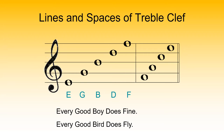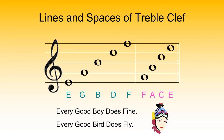How would you help students remember the lines and spaces? You might use a sentence like 'Every Good Boy Does Fine,' or in our modern world be more gender neutral and say 'Every Good Bird Does Fly.' The spaces spell out F-A-C-E, which forms a good mnemonic to remember those particular parts of the treble clef.